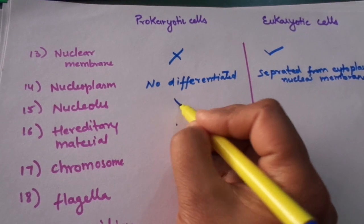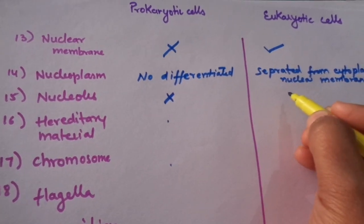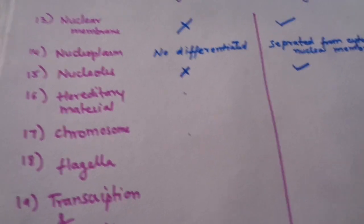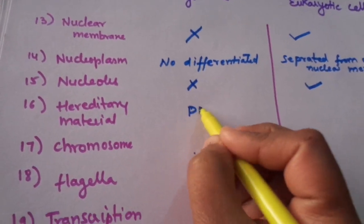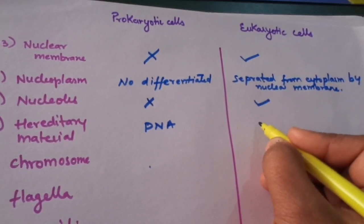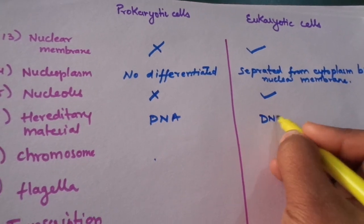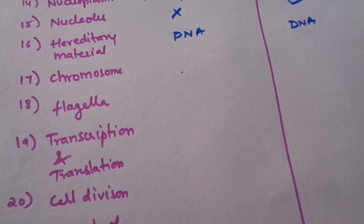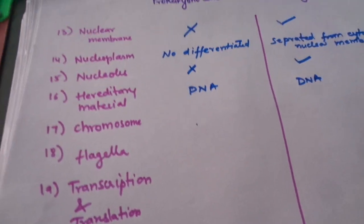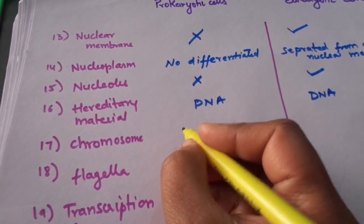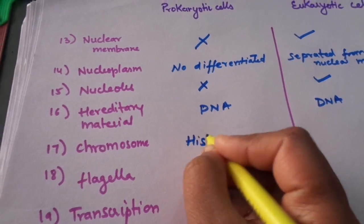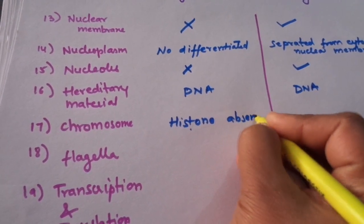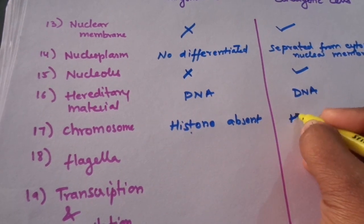The hereditary material in both eukaryotic and prokaryotic cells is DNA. Regarding chromosomes, histones are absent in the case of prokaryotes, whereas histones are present in eukaryotic cells.